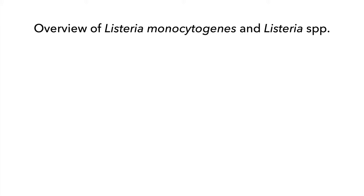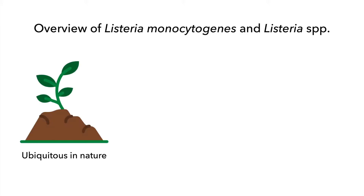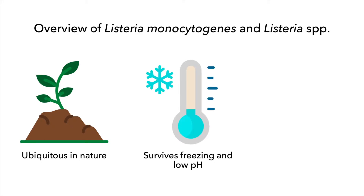There are three facts to remember about Listeria. Listeria monocytogenes is ubiquitous in nature, often found in soil. These bacteria can survive in a wide range of environments, including freezing temperatures and low pH.